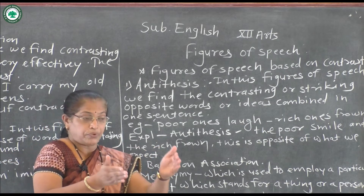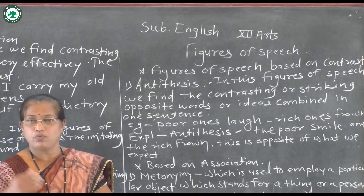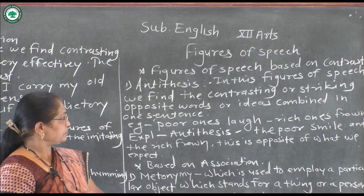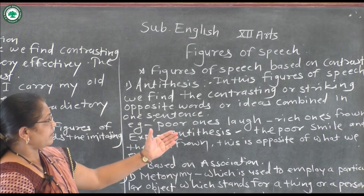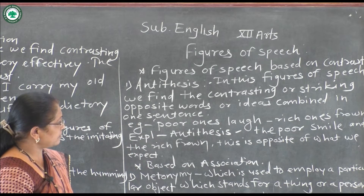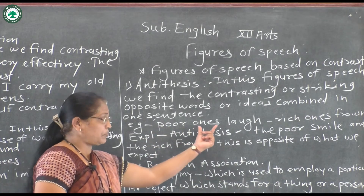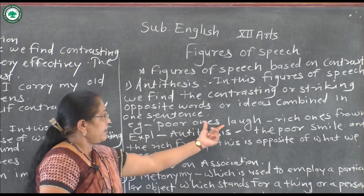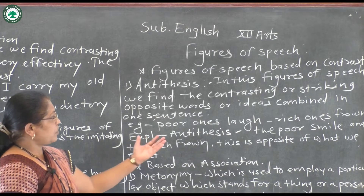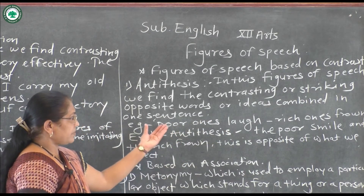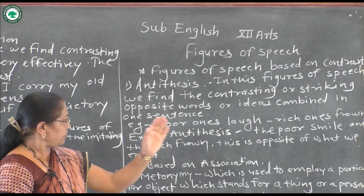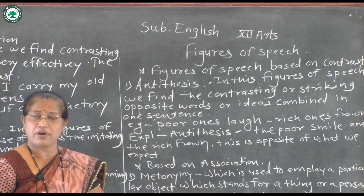The poet uses two opposite thoughts to create a greater effect in his poem. For example: 'Poor ones smile and rich ones frown.' Which two opposite words can we find here? You can easily understand that when there are two opposite words, two opposite thoughts, two opposite ideas used, it is definitely the antithesis figure of speech. Poor and rich, smile and frown — those are opposite words and opposite ideas.